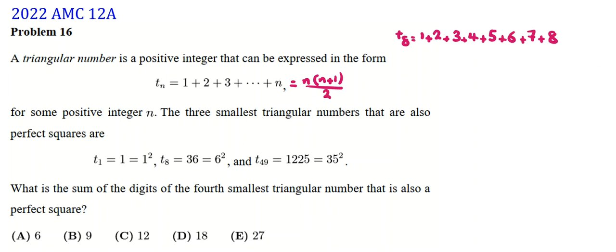The proof of the formula uses Gauss's idea, which is useful in other contexts like IMO problems. So 1 to 8 is 8 × 9 / 2 = 36, which is 6 squared. So T_8 is again a perfect square.